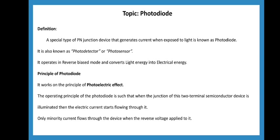The principle of photodiode: how does a photodiode work? It works on the principle of the photoelectric effect. In the photoelectric effect, when the junction of the two-terminal semiconductor device is illuminated, electric current starts flowing through it. That is the photoelectric effect.